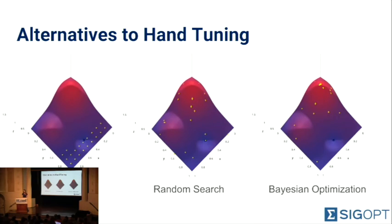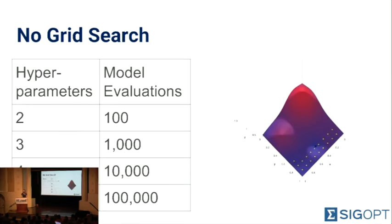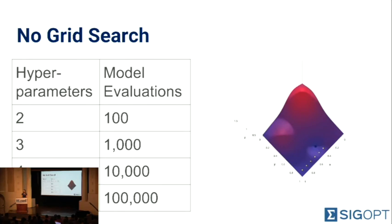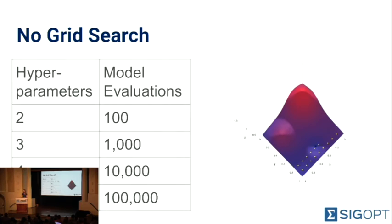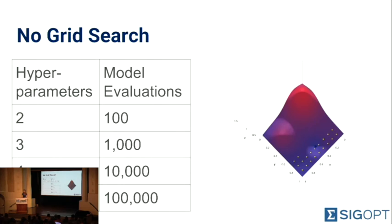At SigOpt, we have 'no grid search' and 'no random search' stickers — I'd encourage you to pick one up after this talk. We don't like grid search because it suffers from the curse of dimensionality. The number of model evaluations grows exponentially with the number of parameters. If you have five hyperparameters and want to try ten values each in grid search, you'll need to evaluate your model 100,000 times — and if you're using K-fold cross-validation, that's K times 100,000 evaluations, which is computationally infeasible for many. The alternative of reducing values per parameter often results in a grid too coarse to produce useful results.